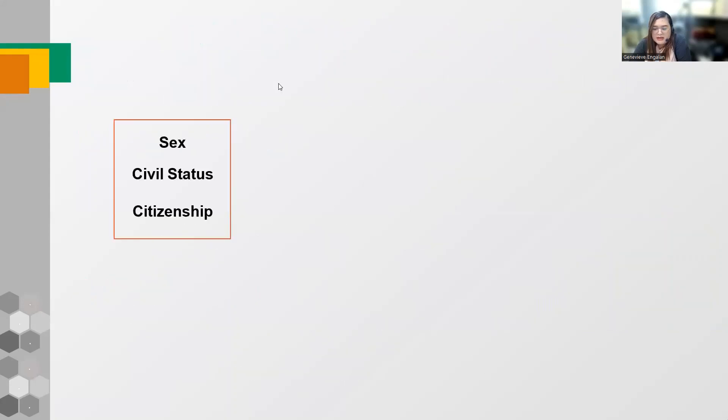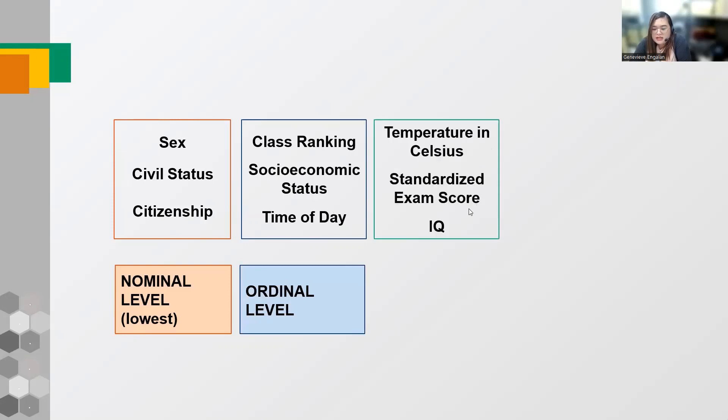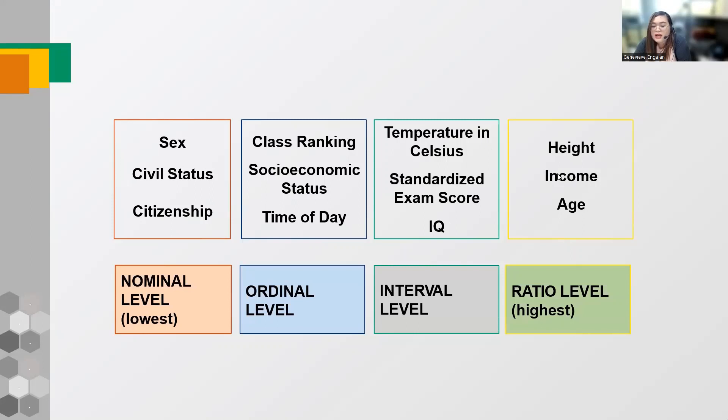Let us identify kung unsan siyang mga variables. So katong ganina, sex, civil status, and citizenship, that is under nominal level. This is the lowest nga level of measurement. Class ranking, socio-economic status, time of the day, that is ordinal level. Temperature in Celsius, standardized exam score, and IQ, that is interval level. Then ang height, income, age is in ratio level. So of course, ang income, kung may kagwalay income, zero ang income, pasabot wala gichay income. Kung ang height is zero, pasabot wala gichay height. So again, ratio level is the highest level of measurement.